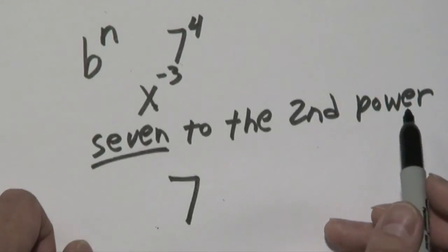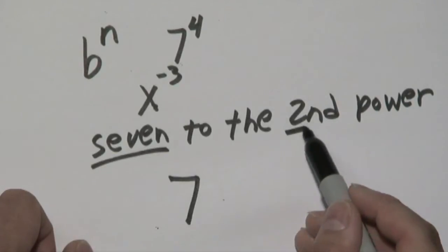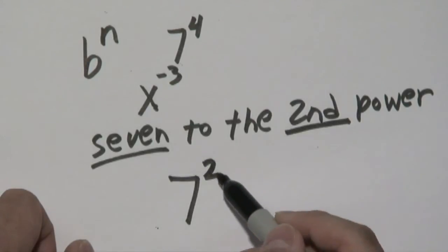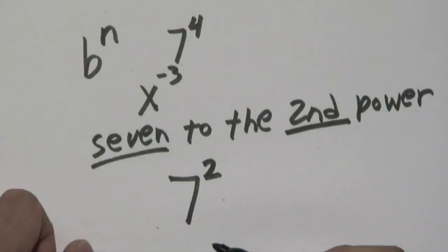What's mentioned before the word power is going to be your exponent. So 2nd power, that means the 2 is going to go here as your exponent.